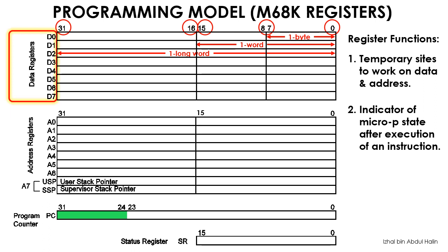Below the data registers, we have the address registers. There are eight address registers: A0, A1, A2, A3, A4, A5, A6, and A7. They are all used to temporarily store memory locations. Note that address register A7 is reserved to be used as either a user stack pointer or as a supervisor stack pointer. Stack pointers are used to point at the address of the stack. In general, stacks are locations in memory reserved by the programmer to temporarily store data. This is done in the case that the data registers are all already in use. We will study more on stack operations in a different video series.